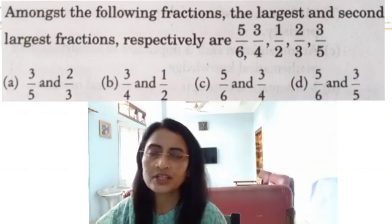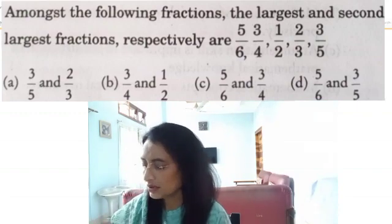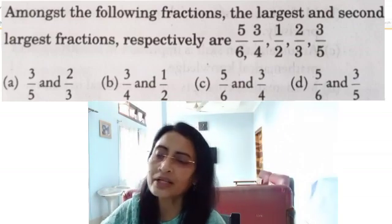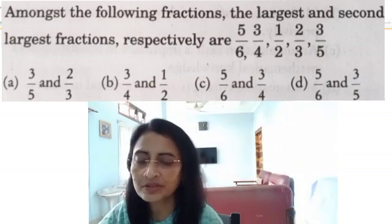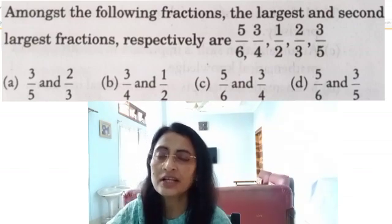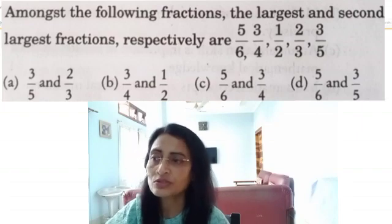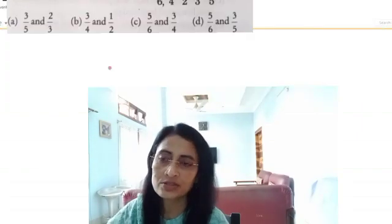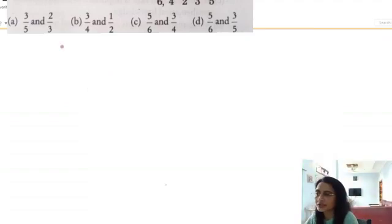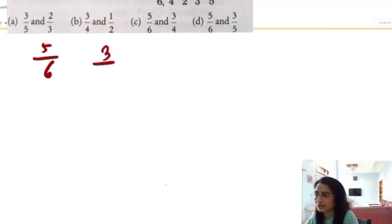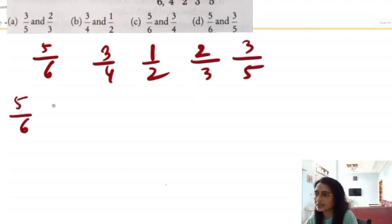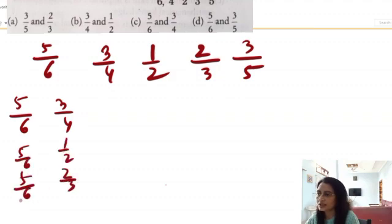For finding the largest and second largest, we will compare the fractions. We have a shortcut trick — there is a link in the description box. We will use the shortcut trick. The fractions given are: 5/6, 3/4, 1/2, 2/3, and 3/5. We compare 5/6 with 2/3, then 5/6 with 2/3 again, then 5/6 with 3/5.